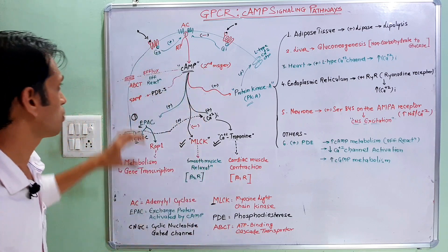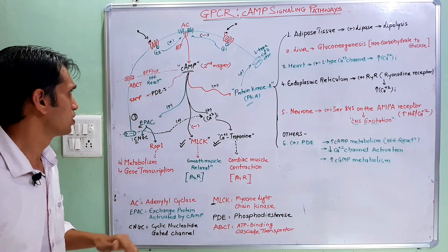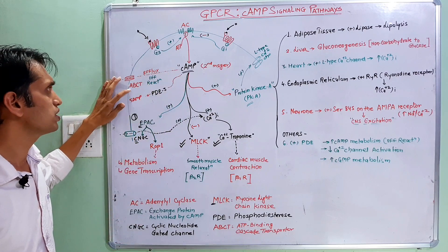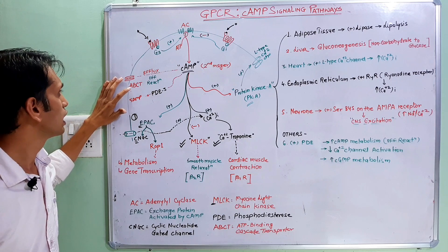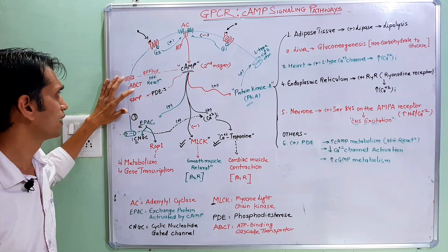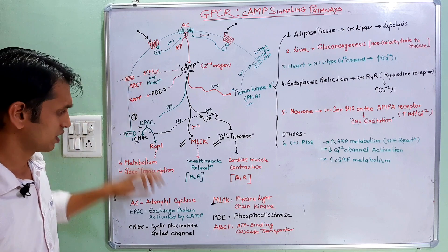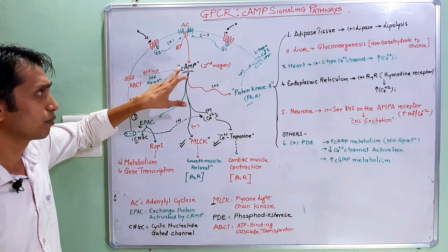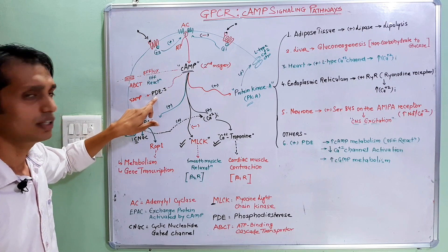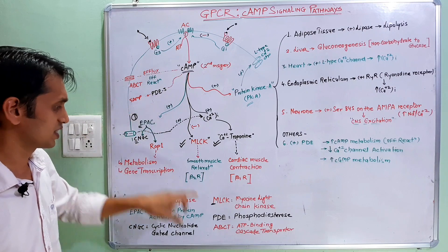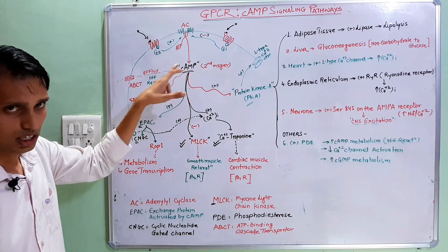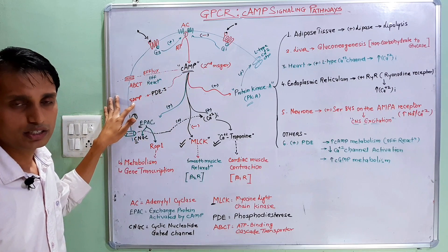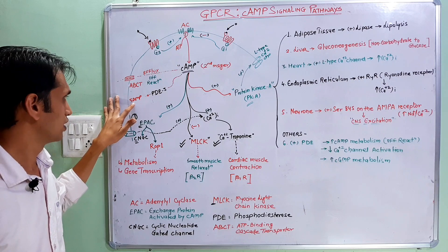Two pathways exist for cyclic AMP removal. First is the efflux system — cells have efflux proteins like ABCD transporters, which are ATP-binding cassette transporters. Second, cyclic AMP is further metabolized by the PDE enzyme, meaning phosphodiesterase enzyme, which converts cyclic AMP into 5'-AMP, which is a non-cyclic product.